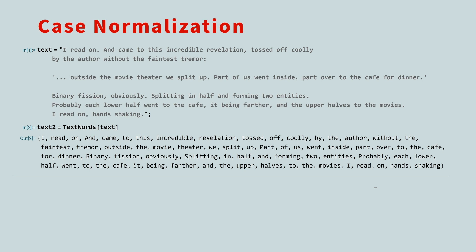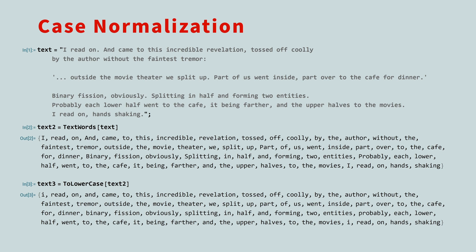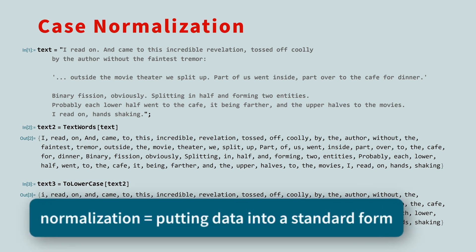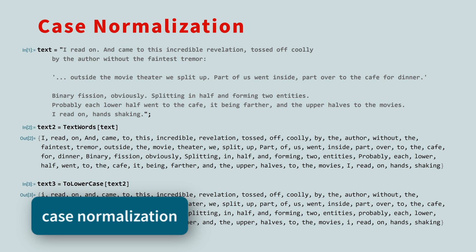As you scan your eyes over this list of tokens, you'll notice that some words are capitalized, and others are not. Another common step is to replace all characters with lowercase characters. In the Wolfram language, you can do this with the ToLowercase function. The process of taking data and putting it into a standard form is called normalization. So, one fancy way to describe this step is case normalization. This step helps to reduce complexity in text, and make data more uniform.